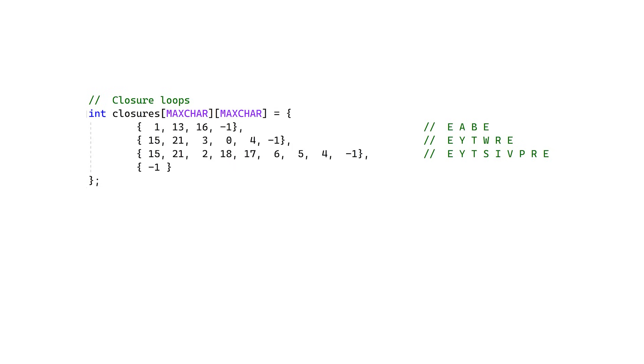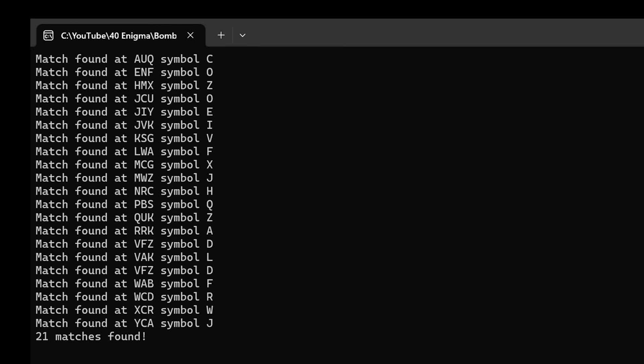I'll enter these closure loops into our code, and we get 21 solutions, which is about what we'd expect from three closures.